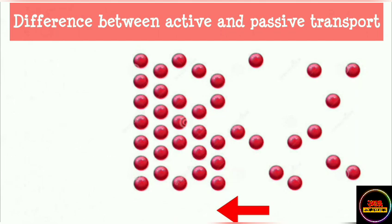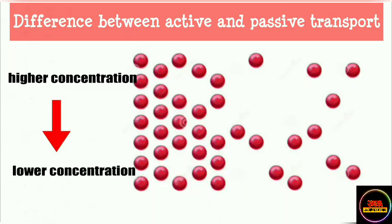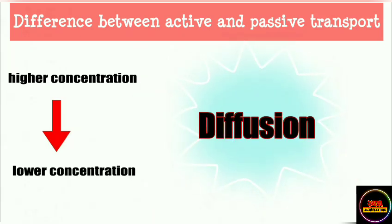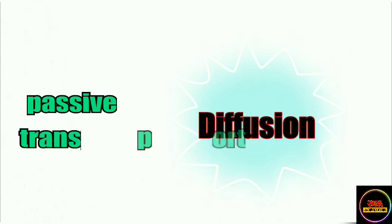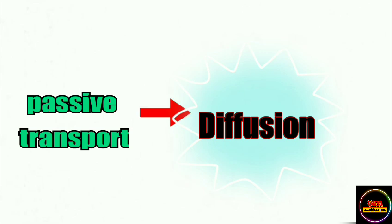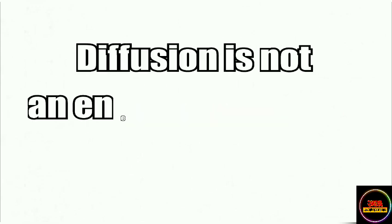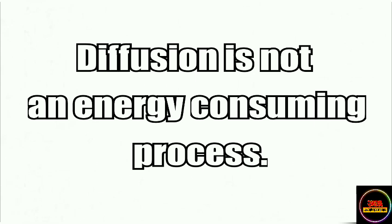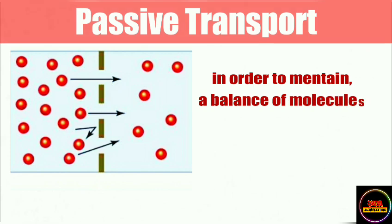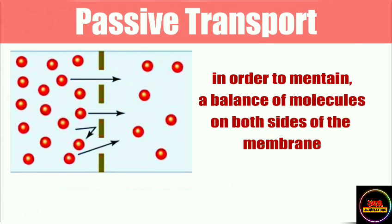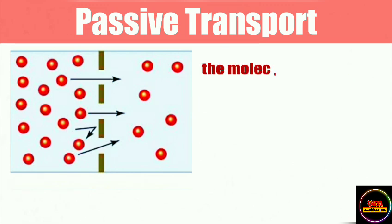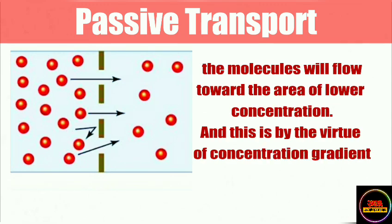When molecules travel from higher to lower concentration, that is known as diffusion — hence passive transport can also be termed diffusion. During this process, no energy is required because molecules naturally flow toward the area of lower concentration by virtue of the concentration gradient.